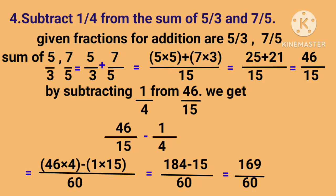Fourth problem: Subtract 1 by 4 from the sum of 5 by 3 and 7 by 5. Find the sum: LCM of 3 and 5 is 15, so 5 by 3 plus 7 by 5 equals 25 plus 21 by 15, which is 46 by 15. Then subtract 1 by 4 from 46 by 15. LCM of 15 and 4 is 60. After subtraction, we get 184 minus 15 by 60, which equals 169 by 60.